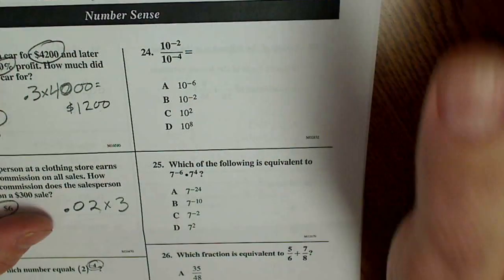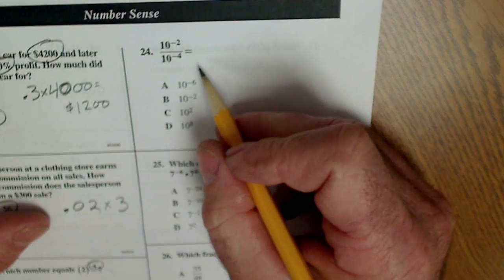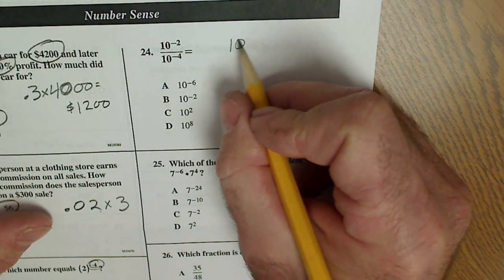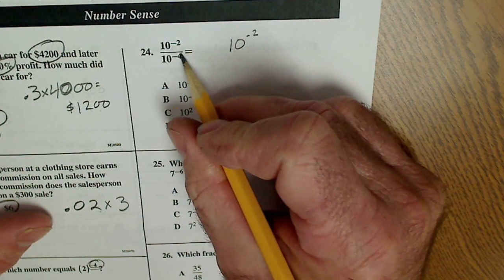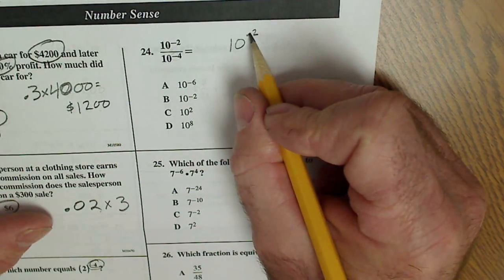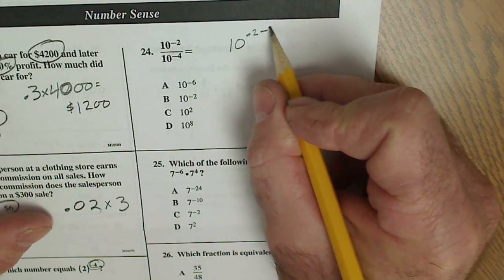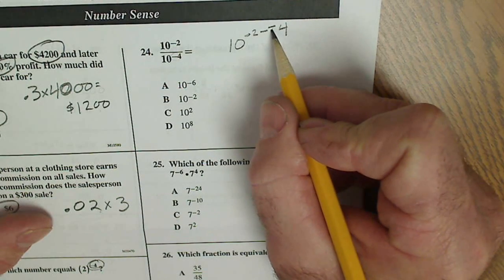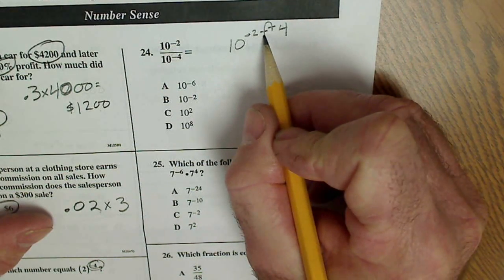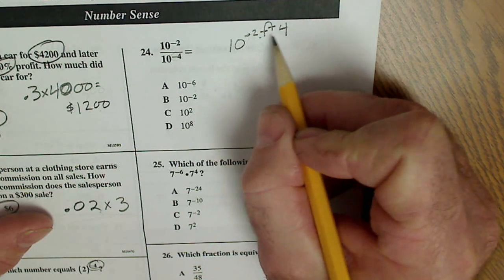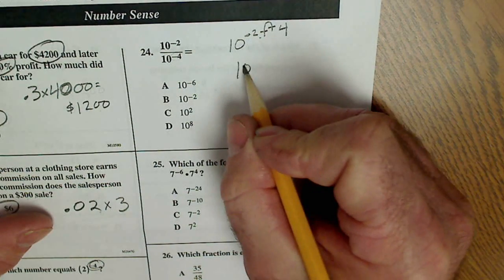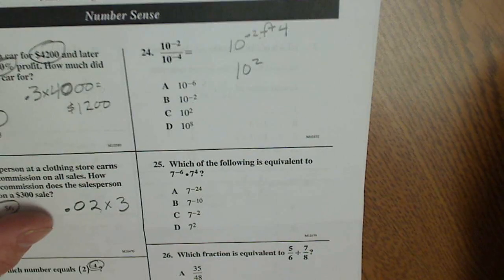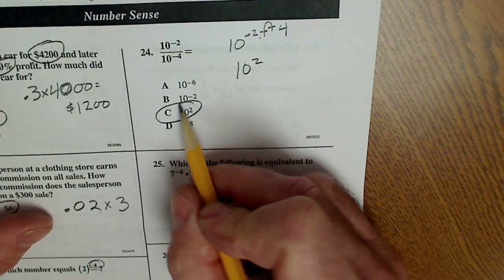If I'm dividing with exponents here, I subtract. So, if I have 10 to the negative 2 over negative 4, I have negative 2 minus a negative 4. The way I remember these, it's like a little guy on a diving board jumps off the diving board, breaks the surface of the water. Negative 2 plus 4 is 2. So, I have 10 squared. 10 squared, there's my answer right there.